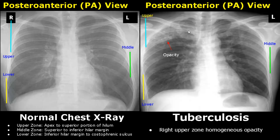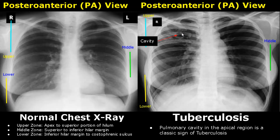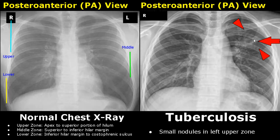The first disease is tuberculosis. In pulmonary tuberculosis, it can present as upper zone opacity. You will see a bright area in the right upper zone, which is the apical region. Opacities in the upper zone are most commonly due to tuberculosis. A pulmonary cavity in the apical region is a classic sign — it appears as a round structure with a radio-opaque border, that is a bright border, and a radiolucent, dark center. Small nodules in the left upper zone can also occur in tuberculosis.